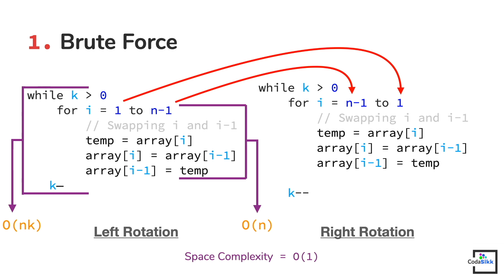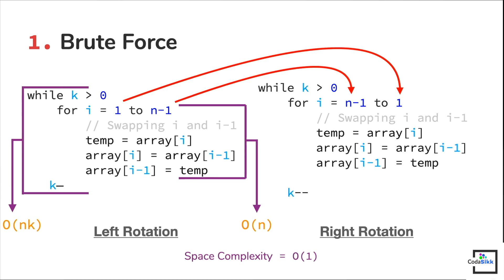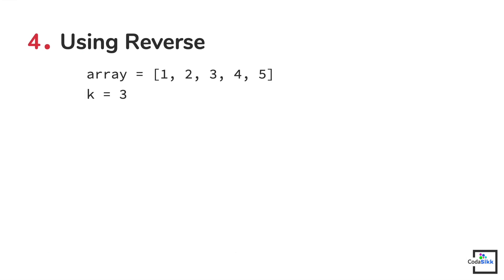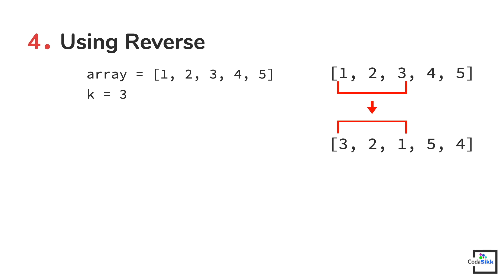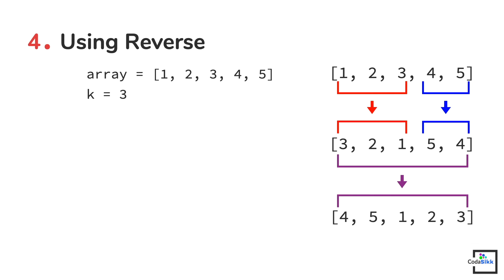For this particular problem, you cannot find an algorithm that takes less than O(n) time, as you have to move all elements of the array at least once to rotate it. The best way to solve this in O(n) time is by reversing the array three times — but not the entire array three times. Instead, we first reverse the first k elements, then the last n minus k elements, and finally the entire array. All this reversing needs to be done separately. Since we need the array reverse algorithm three times, let's make a separate function for it.